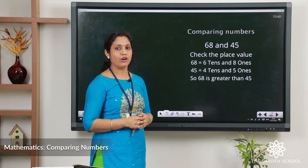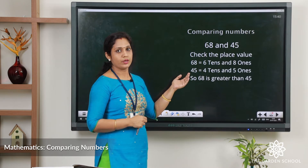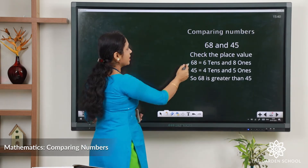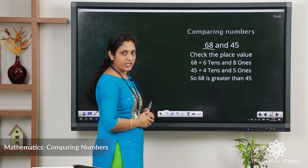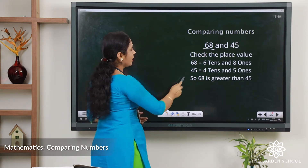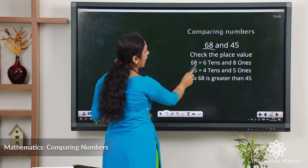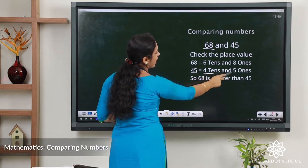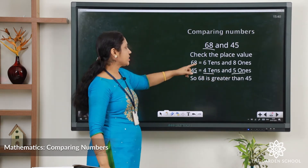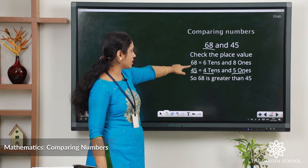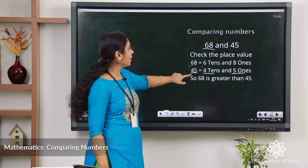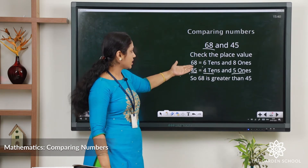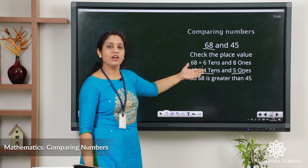Let's take another example: 68 and 45. Both are 2-digit numbers, so how can we find out which is greater? Let's check the place value. In 68 there are 6 tens and 8 ones. In 45 there are 4 tens and 5 ones. Comparing the tens: 68 has 6 tens and 45 has 4 tens, so 68 is greater than 45.